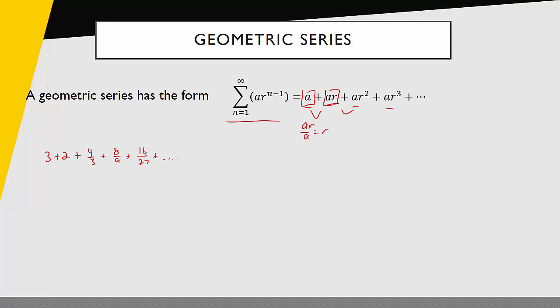That's true for any consecutive terms in a geometric series. If I divide ar cubed by ar squared, I again get r. So I can do that same thing with this series — divide consecutive terms to find the ratio. If I look at these two terms, I take 2 divided by 3, and I'm guessing that's my value for r. Now I check: does multiplying by 2 thirds get me to the next term? 2 times 2 thirds equals 4 thirds — yes. Multiply by 2 thirds again — yes. So it is geometric, and I've found r.